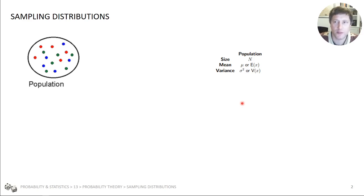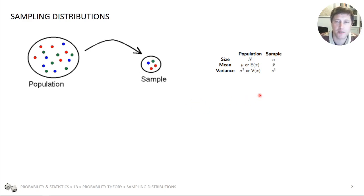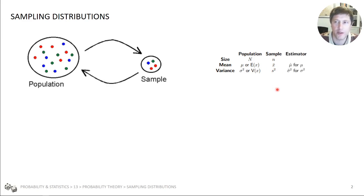Those are the values that we would like to find out ideally. But to do that we need to take a sample — a random subset of the population — and we have different terminology. This is lower-case n for the number of points, x-bar for the mean, and s-squared for the variance. The variance could be calculated in an unbiased or biased way. From the sample we want to work out some stuff about the population, so we use estimators: the estimator for the mean and the estimator for the variance.